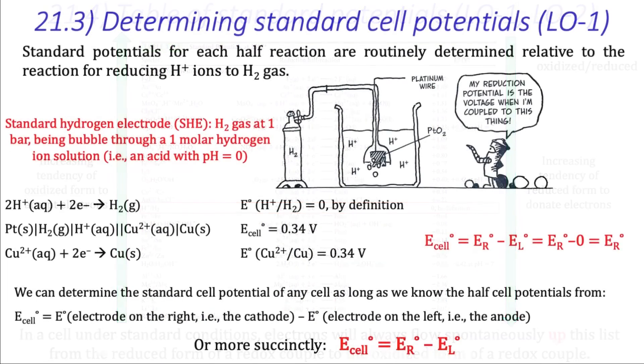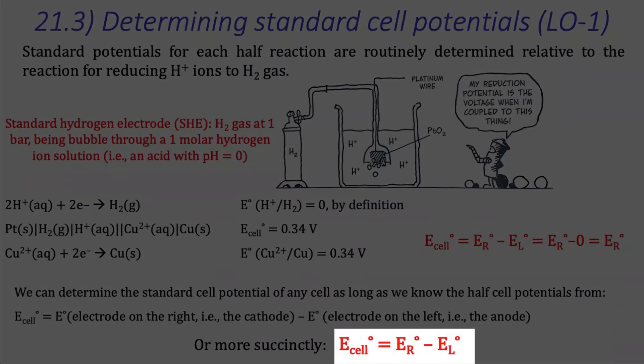This is the equation we use in which we subtract the standard reduction potential of the half-cell on the left, which is the anode, from the standard reduction potential of the half-cell on the right, which is the cathode.